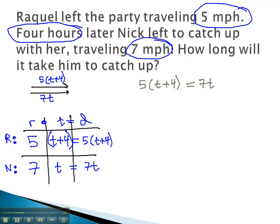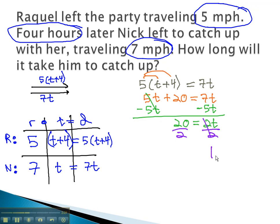That gives us an equation we can quickly solve by first distributing the 5. 5t plus 20 equals 7t. Start solving by getting the variables all on one side of the equation. Subtracting 5t from both will give us 20 equals 2t. Finally, dividing by 2 will tell us the amount of time Nick needs to catch up. 10 hours.